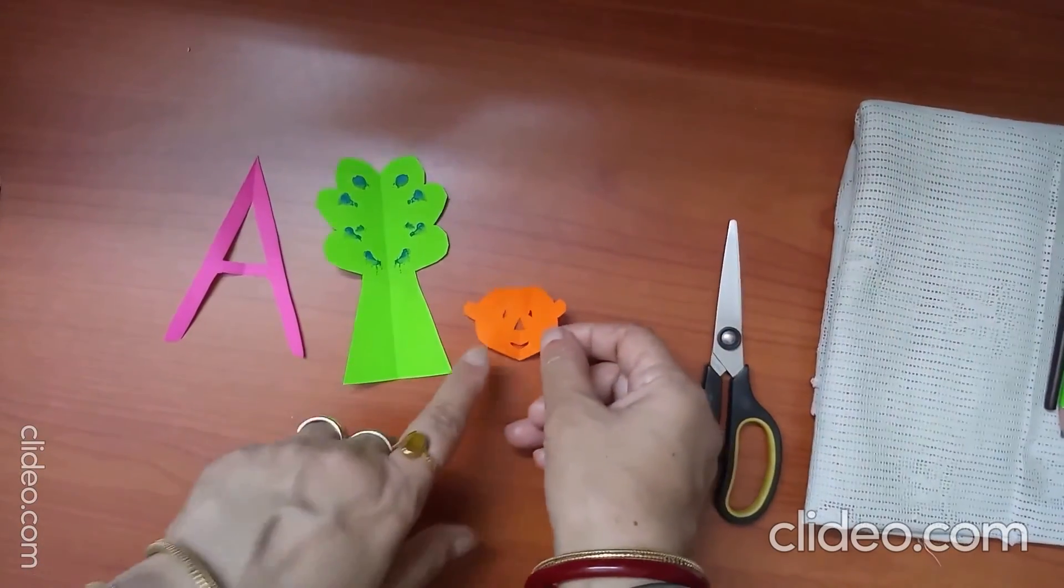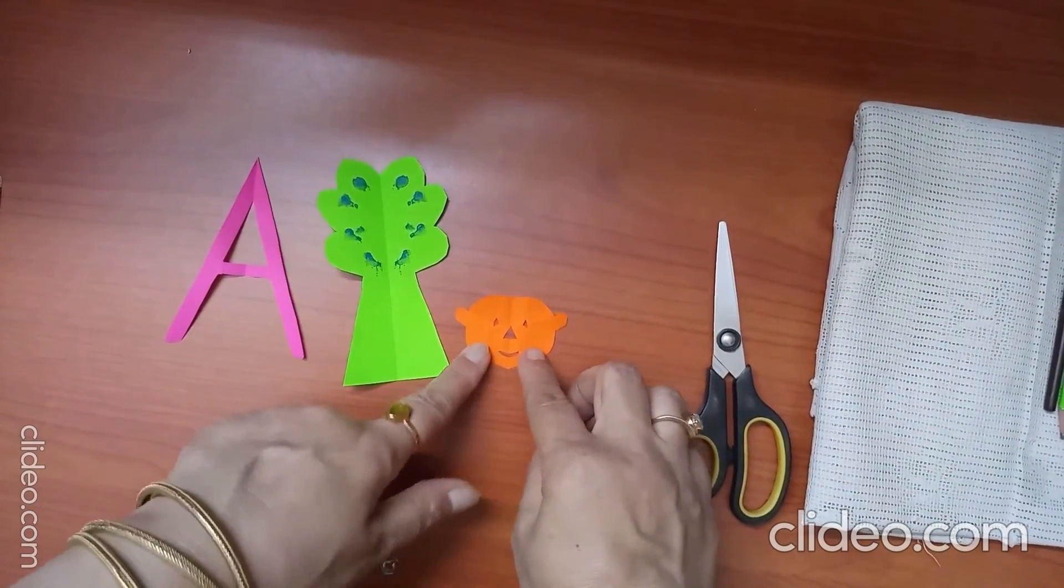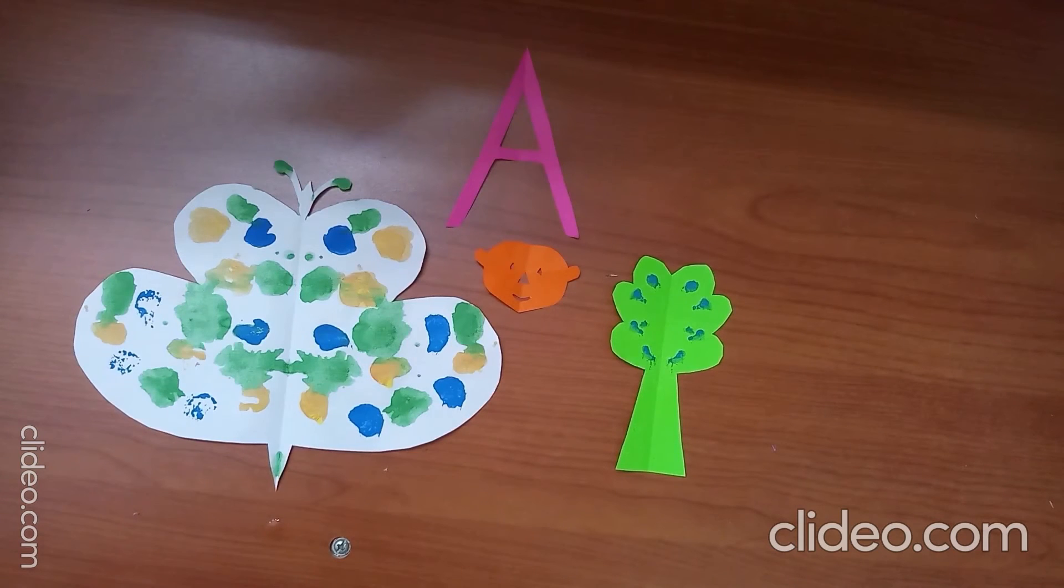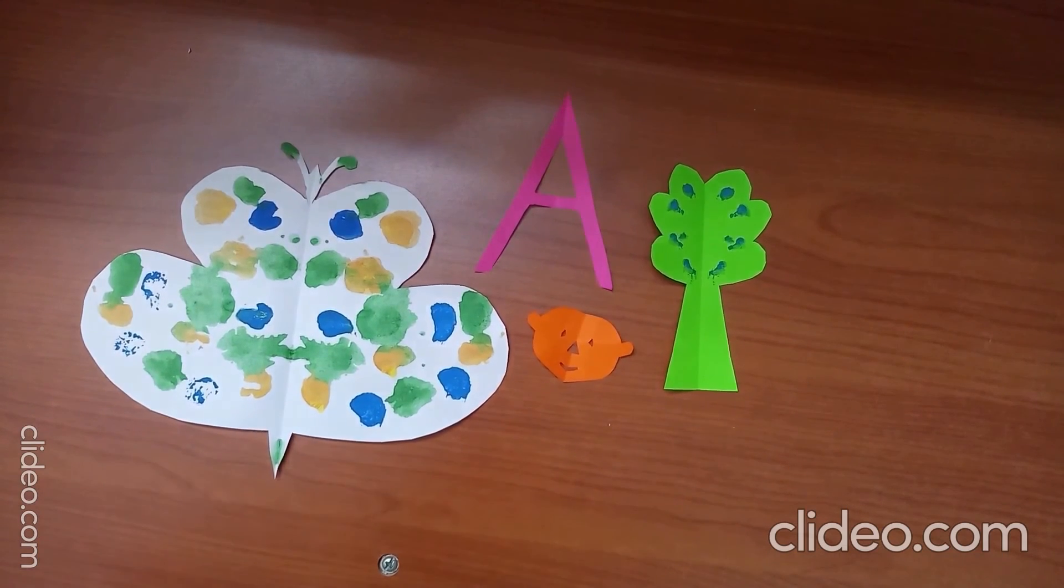That is symmetrical in shape. So what we have learned, a shape that looks same from both sides is called symmetrical shape. Hope you have liked today's activity, that's all for today, bye bye.